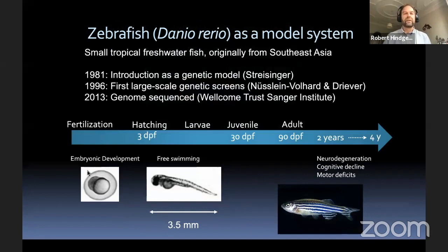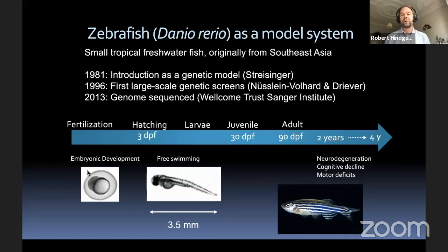Just very basic — and I know probably a lot of people are aware of this. This is a small freshwater fish originally from Southeast Asia. It has been used before, but not really introduced as a genetic model until the early 80s with the experiments from Streisinger. The next milestone was the first large-scale genetic screens by Nüsslein-Volhard and Wolfgang Driever. And since 2013, we have the whole genome sequence, published by the Wellcome Trust Sanger Institute — a very important step forward.